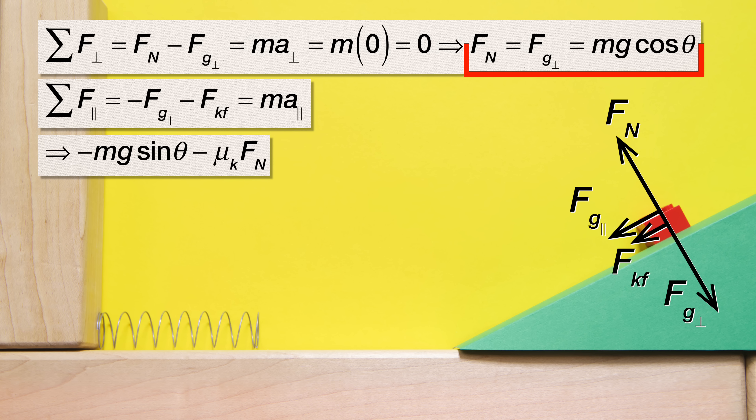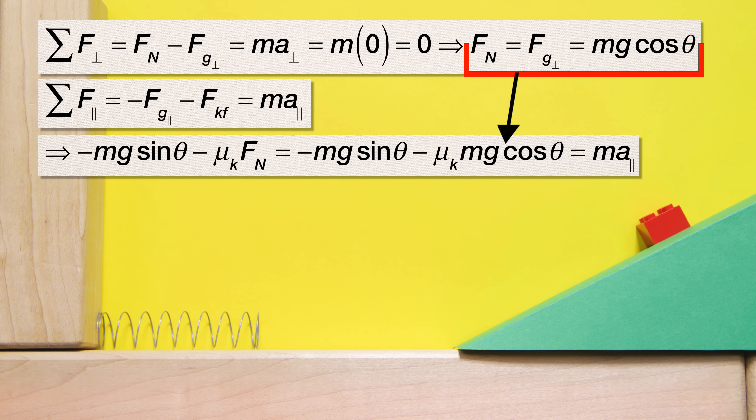And for the force of kinetic friction, we can substitute in the coefficient of kinetic friction times force normal. From our equation holster, we can substitute for the force normal: mass times the acceleration due to gravity times the cosine of the incline angle.